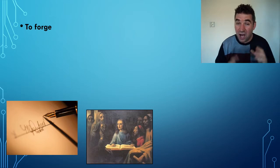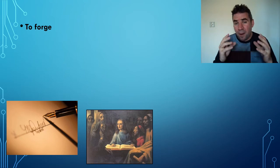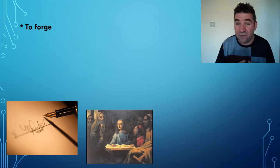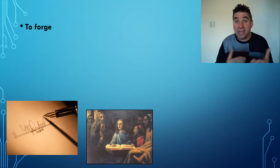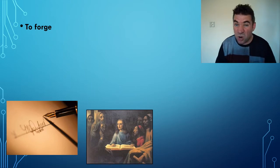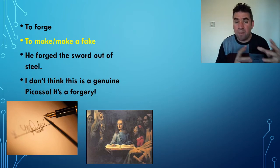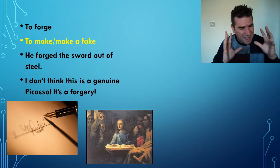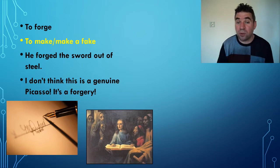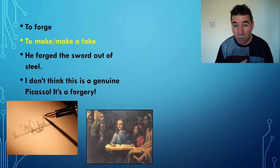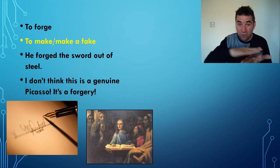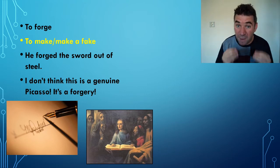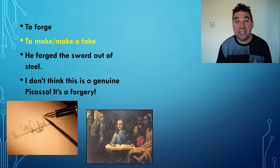A lot of people have amazing talent when it comes to painting but don't have the creative ideas, so what they specialize in is making forgeries — copies of classical pictures which look almost identical. To forge something means to make it, and nowadays a forgery is a fake copy. 'He forged the sword out of steel.' 'I don't think that's a genuine Picasso — I think it's a forgery.' In supermarkets, when you give them a 50 euro note, they flash it through a UV light machine to check whether the money is a forgery.